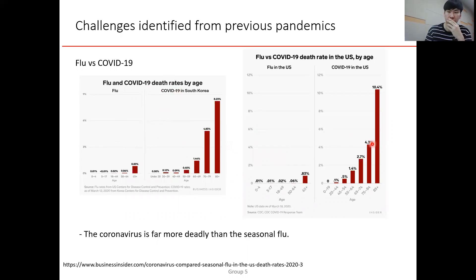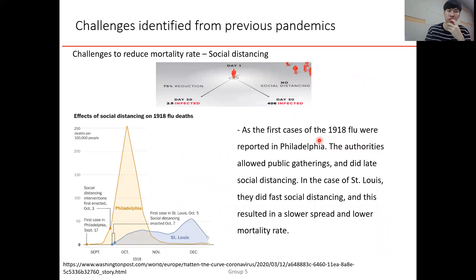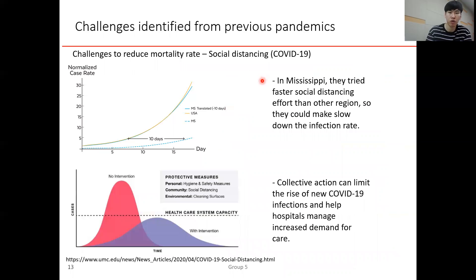One of the challenges to reduce mortality rate is social distancing. Social distancing can prevent infection from spreading. For example, the first cases of the 1918 flu were reported in Philadelphia, where authorities allowed public gatherings and delayed social distancing. However, St. Louis implemented early social distancing, showing a significant difference between the two cities. Similarly, Mississippi tried faster social distancing efforts than other regions, which slowed the infection rate.